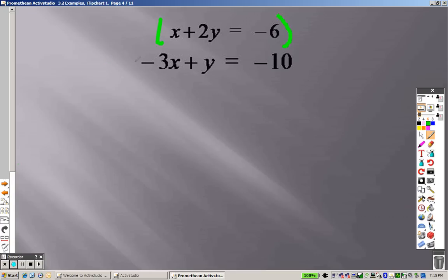So according to my method, the top is a 1, so I multiply the bottom by 1. The top is a negative 3, so I multiply the top by 3. 3 times 1 is 3x. 3 times 2 is positive 6y. 3 times negative 6 is negative 18. 1 times negative 3 is negative 3x. 1 times y is positive 1y. 1 times negative 10 is negative 10. I add these together.